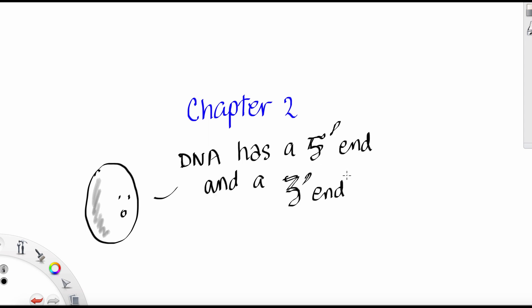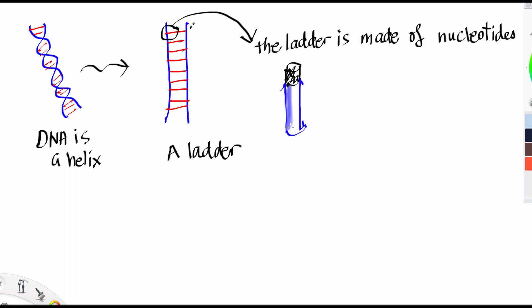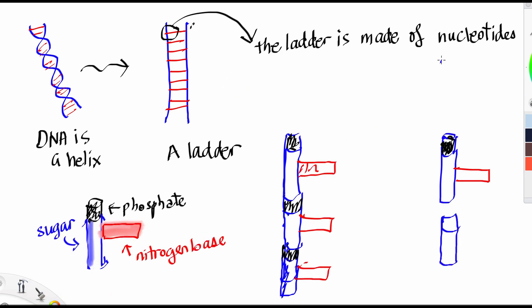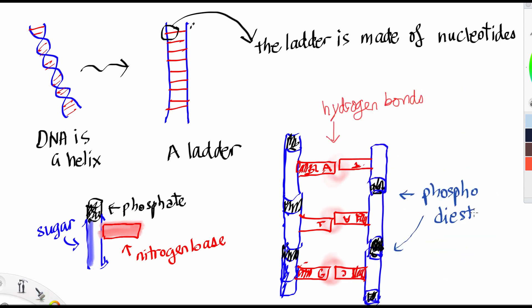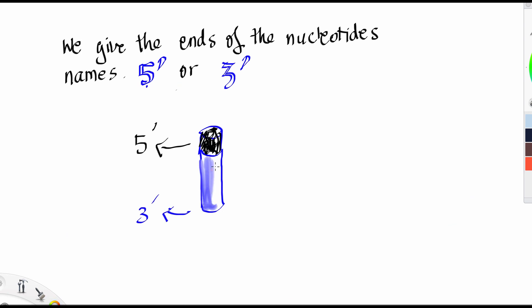DNA has a 5' end and a 3' end. DNA is a helix, a ladder, and the ladder is made up of nucleotides. Nucleotides fit together in a ladder structure that is anti-parallel, with hydrogen bonds and phosphodiester links. We give the ends of the nucleotides names: the 5' end or the 3' end.